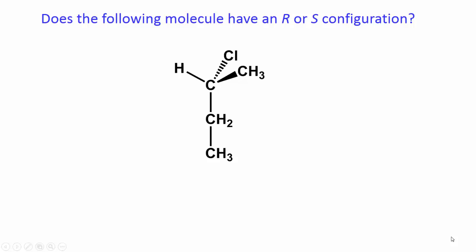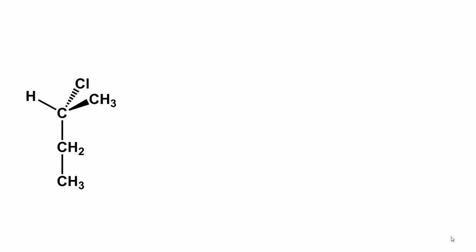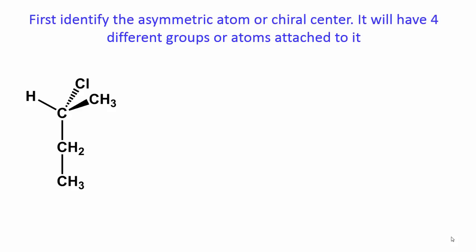Does the following molecule have an R or S configuration? First identify the asymmetric atom or chiral center. It will have four different groups or atoms attached to it.